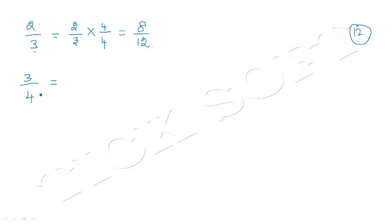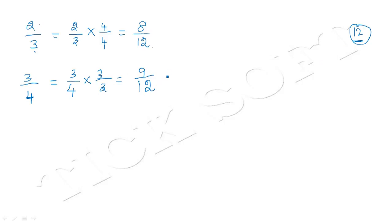Similarly, we convert 3 by 4 into a fraction with denominator 12. The denominator is 4, and when we multiply 4 by 3 we get 12. So we multiply both the numerator and denominator by 3. So 3 into 3 is 9, and 4 into 3 is 12. Therefore, 3 by 4 converts to 9 by 12.